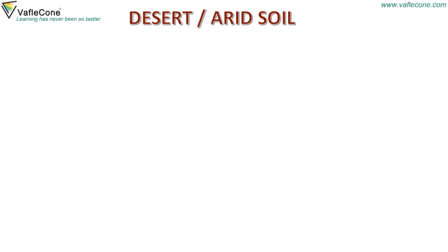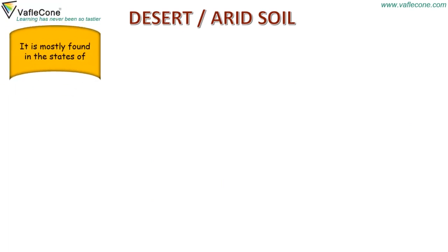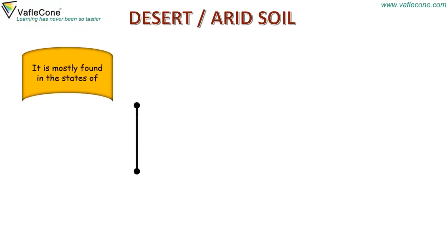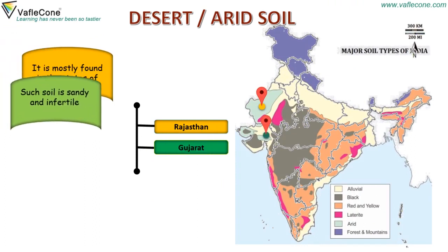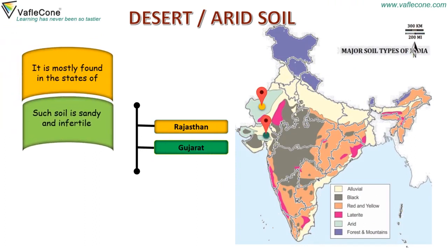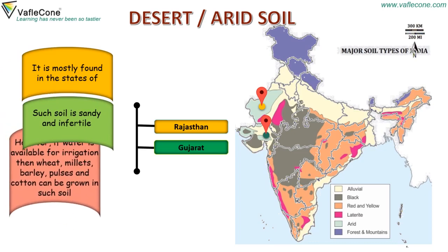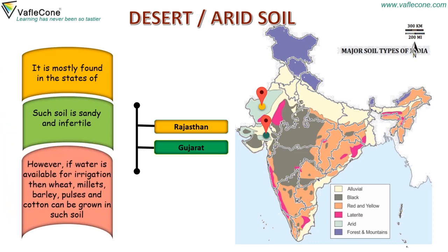Desert soil is mostly found in the states of Rajasthan and Gujarat. Such soil is sandy and infertile. However, if water is available for irrigation, then wheat, millets, barley, pulses and cotton can be grown in such soil.